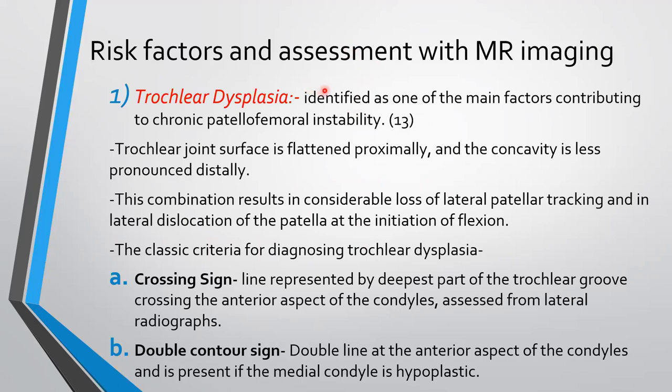Now the risk factors for patellar instability and assessment with MR imaging. First is trochlear dysplasia. It is identified as one of the main factors contributing to chronic patellofemoral instability. The trochlear joint surface is flattened proximally and the concavity is less pronounced distally. This results in considerable loss of lateral patellar tracking and lateral dislocation of the patella at the initiation of flexion. The classic criteria for diagnosing trochlear dysplasia are the crossing sign and double contour sign. The crossing sign is a line represented by the deepest part of the trochlear groove crossing the anterior aspect of the condyle, assessed from the lateral radiograph. The double contour sign is a double contour at the anterior aspect of the condyle and is present if the medial condyle is hypoplastic.